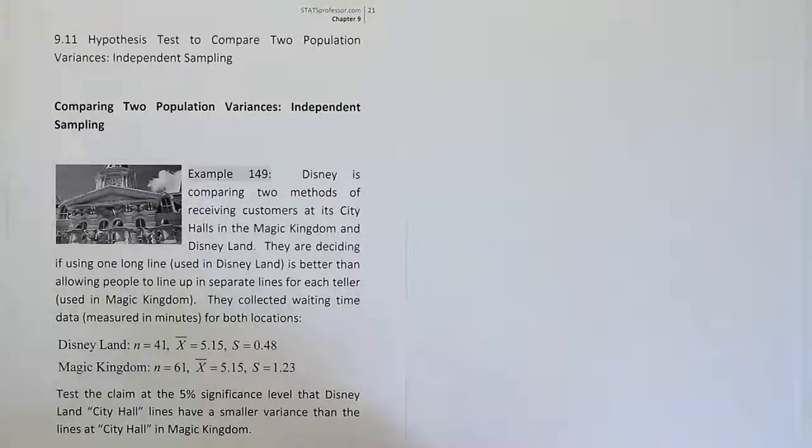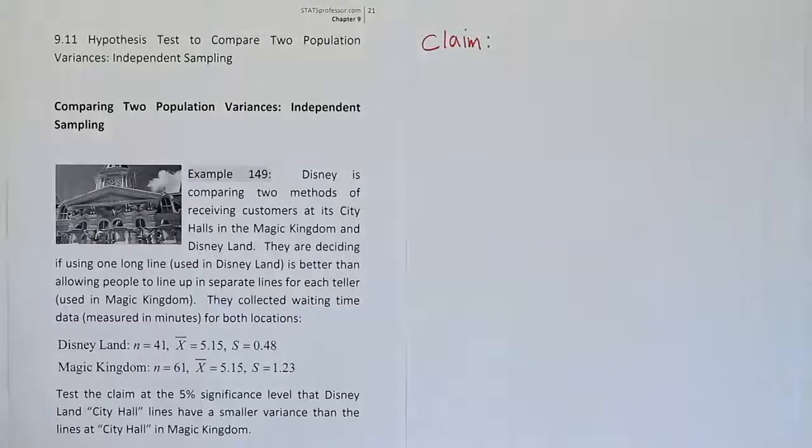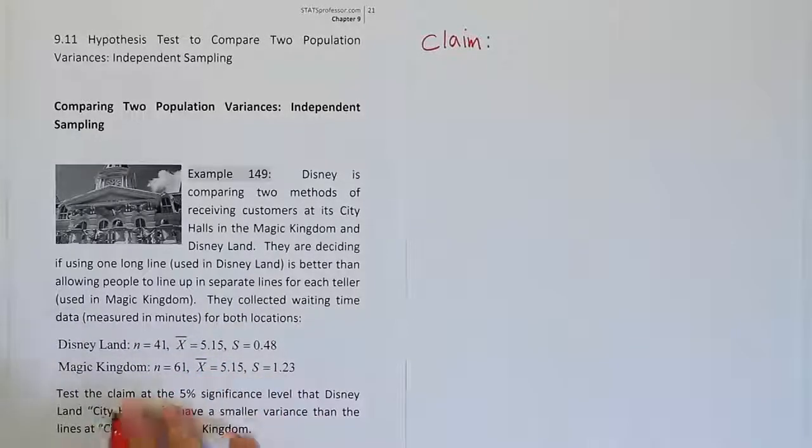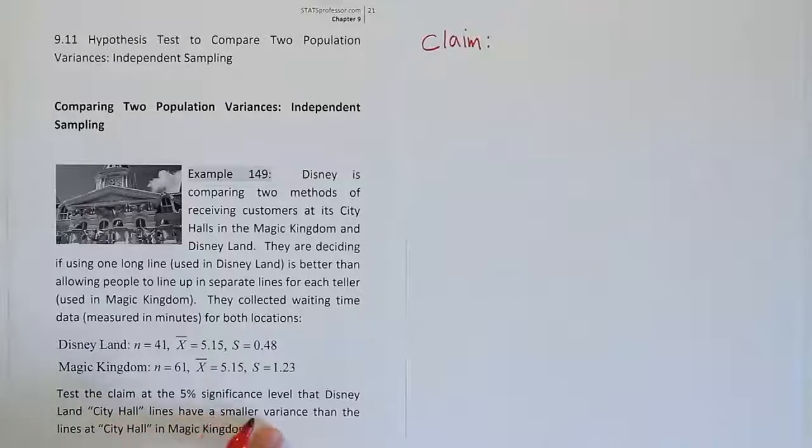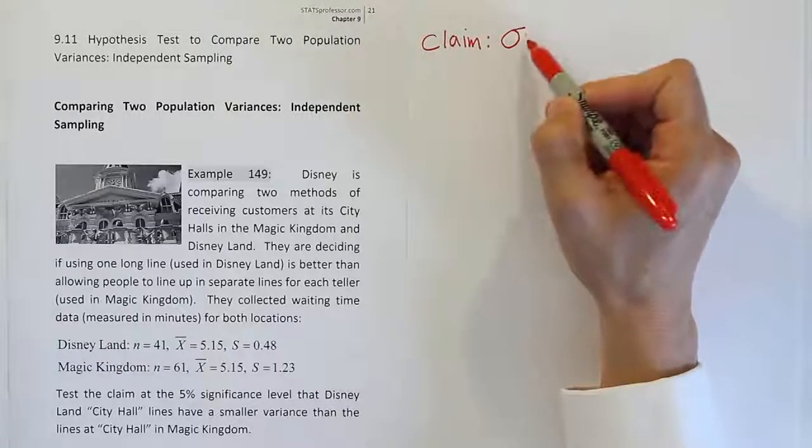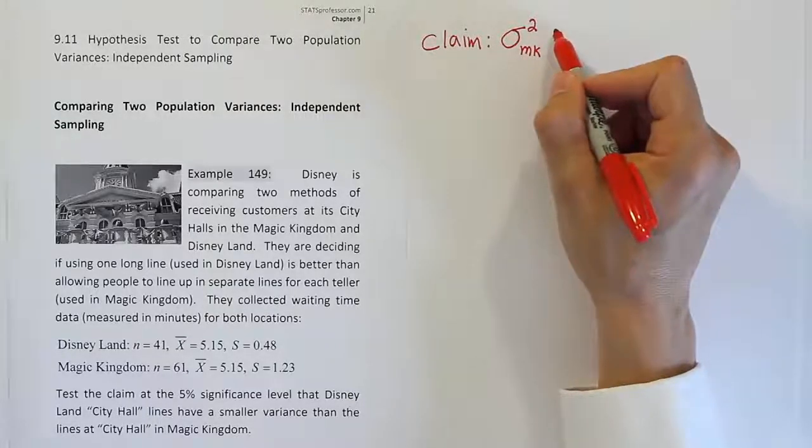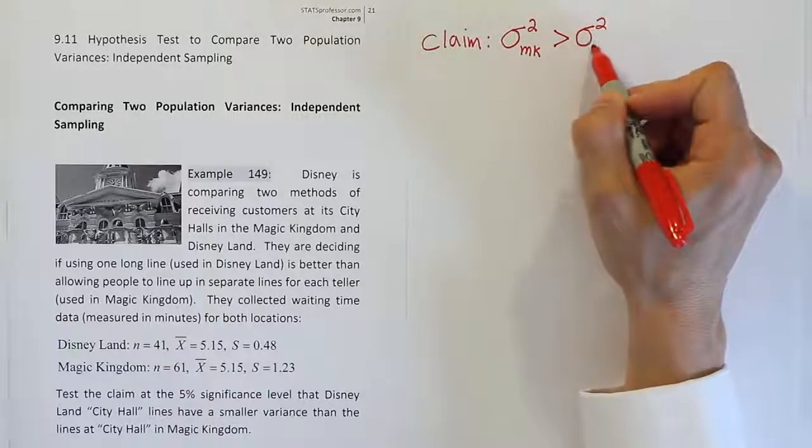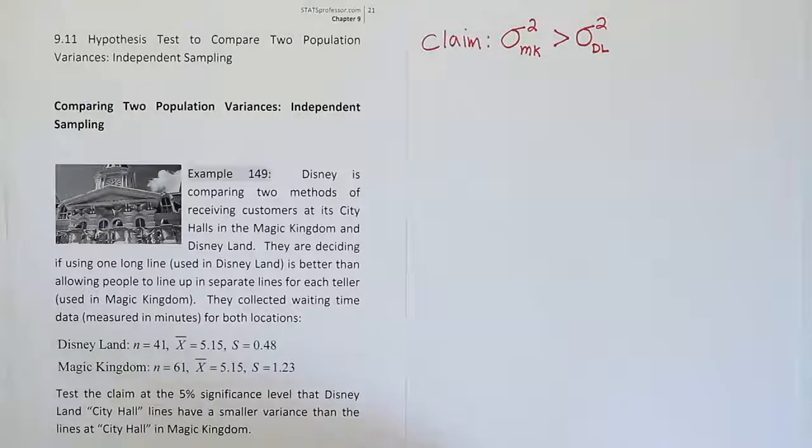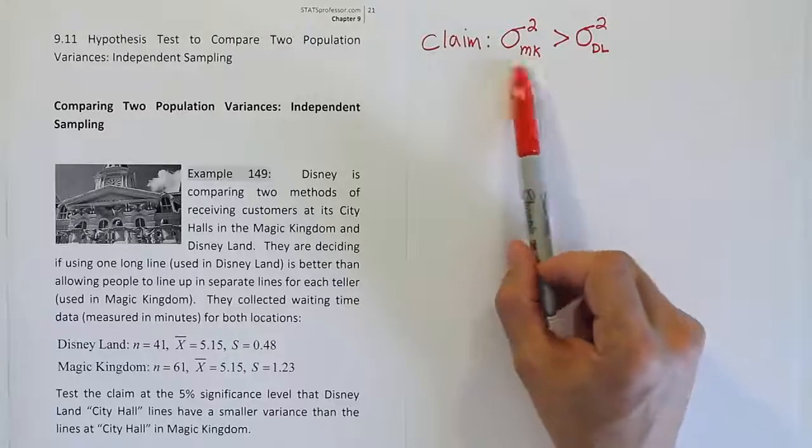So what I'm going to do first is express our claim symbolically. Our claim is that Disneyland City Hall lines have a smaller variance than the ones at Magic Kingdom. So I'm going to say the variance for Magic Kingdom (σ²_MK) is supposed to be greater than the variance for Disneyland (σ²_DL). I hope that makes sense and matches the claim, because they say Disneyland has a smaller variance than Magic Kingdom. So I think the inequality is proper.